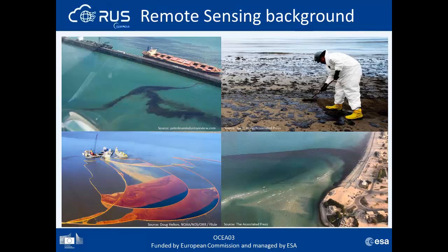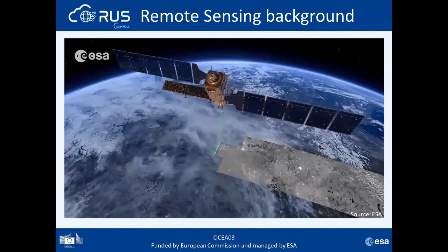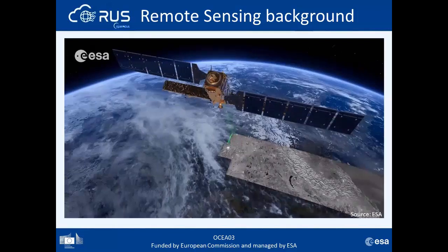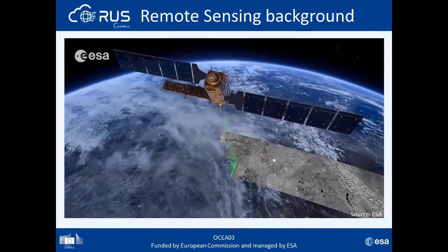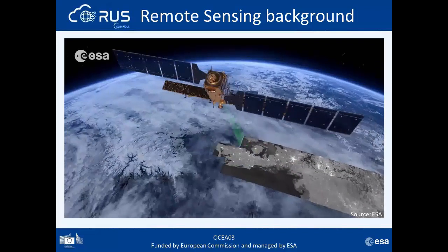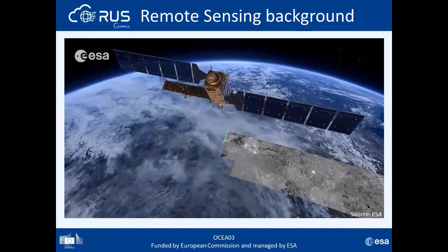Ocean pollution due to oil spills remains a major environmental hazard. Although oil tanker accidents are well known, they are not the main cause — illegal discharges from ships or offshore platforms, drilling rigs, pipeline accidents, or natural leaks bring together most sources of oil pollution in the ocean. Methods for the detection and tracking of oil spills and illegal oil discharges are of fundamental importance for improving the efficiency of maritime surveillance systems. The key advantages of spaceborne Earth observation, together with the characteristics of synthetic aperture radar sensors — day and night and all-weather sensing — enable useful tools for the detection, mapping, and monitoring of oil spills.